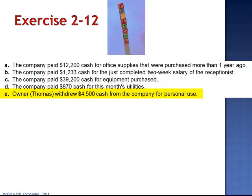And finally, Letter E: the owner, Thomas, withdrew $4,500 in cash from the company for personal use. This transaction decreases both assets and equity, but the reduction in equity was not caused by the operation of the business, but by the owner personally. Letter E is not an expense.